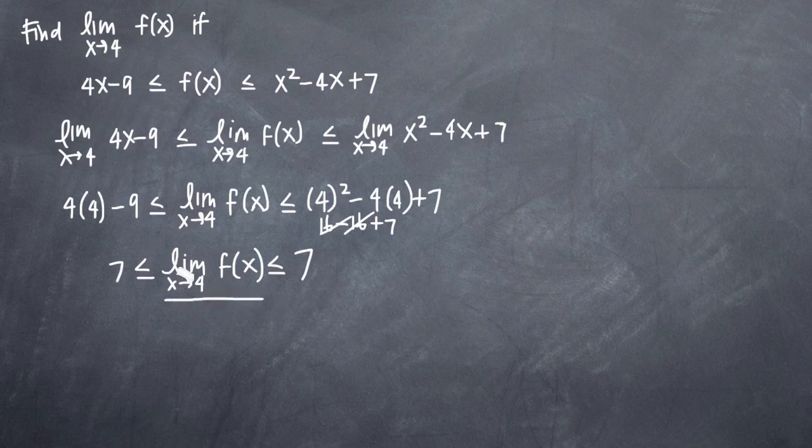has to be at the same time greater than or equal to 7 and less than or equal to 7, then the only possible value for this middle part here is also 7 because anything greater than that would not satisfy the right hand side and anything less than that would not satisfy the left hand side.